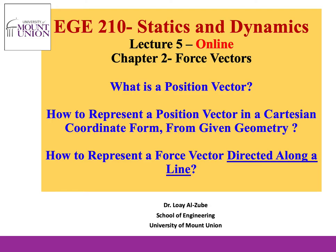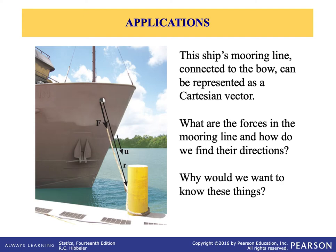Let us start with representing a three-dimensional vector in Cartesian coordinate system. I will talk about the position vector first and how it relates to the force vector. You can see that in this image you have a ship line connected to the bow, and you need to have a representation of the Cartesian vector. So if I have this force here along this mooring line, how can I say what is the direction of the force? Let's say there is 1000 newtons of force — that's a magnitude — and I need to find a direction for this force along the mooring line connected to the bow.